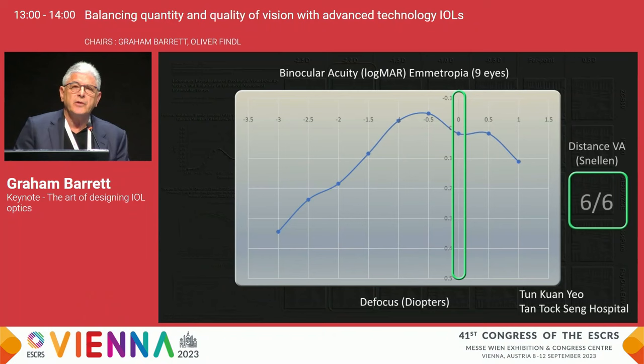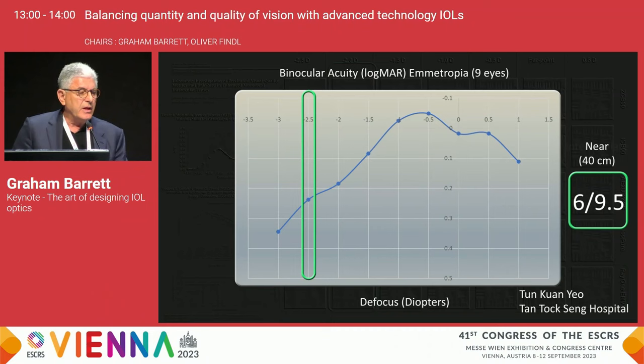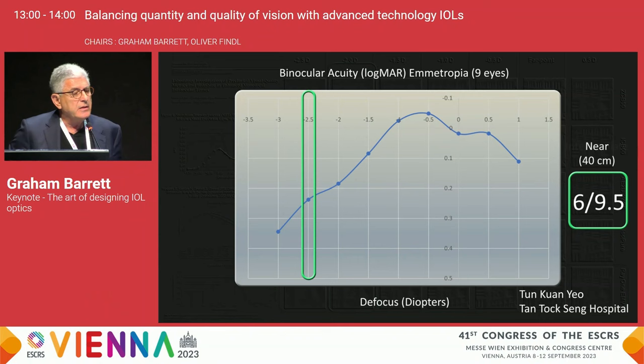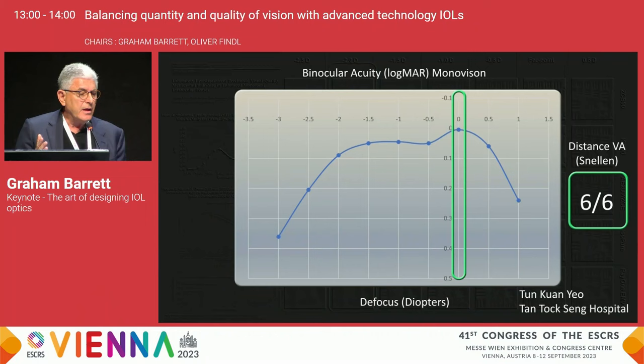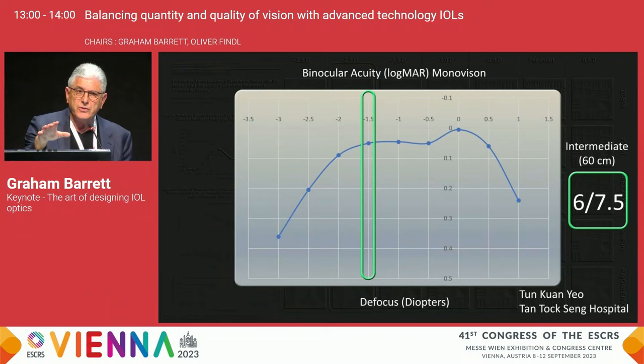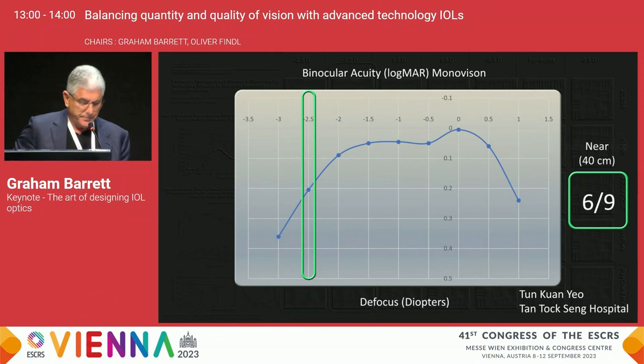This is an example of a defocus curve from a colleague, Tung Kwan, in Singapore. With this optic, vision is good for distance, excellent for intermediate, and even reasonable at near when distance is targeted in both eyes. When myopic defocus is combined — 6/6 for distance, 6/7.5 for intermediate — it only drops to 6/9. So this is the defocus curve using myopic defocus in one eye.